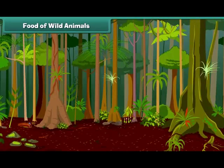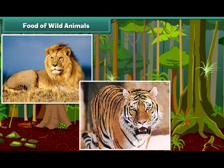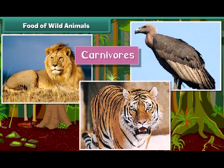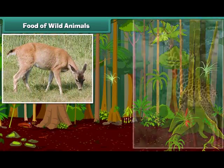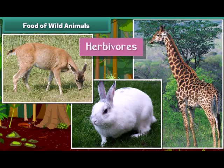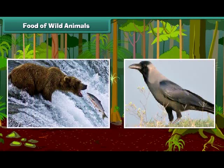Let us look at what wild animals eat for food. Lions, tigers, and vultures are carnivorous animals — they eat the flesh of other small animals. Deer, giraffe, and rabbits are herbivorous animals as they eat only plants.